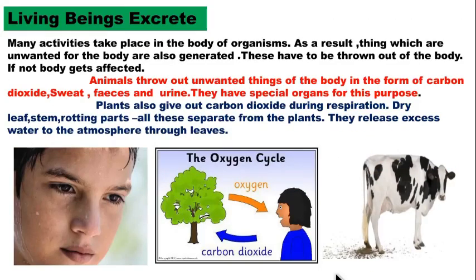Our next point is living beings excrete. Living beings excrete means, for example, in our houses, if any useful things are there we keep them safely, but if any unwanted things are there we throw them outside. If we don't throw unwanted things outside, our house will become dirty. In the same way, many activities take place in the body of organisms. As a result, things which are unwanted for the body are also generated and have to be thrown out. If not thrown out, the body gets affected.